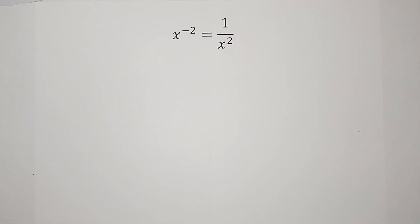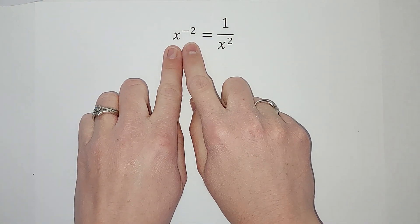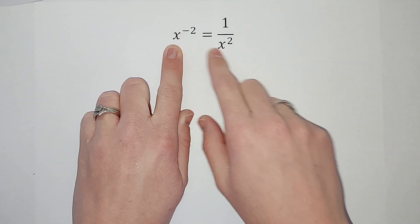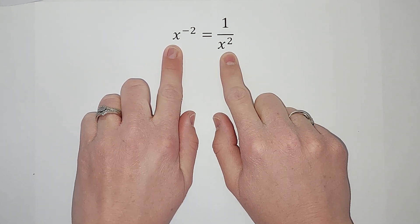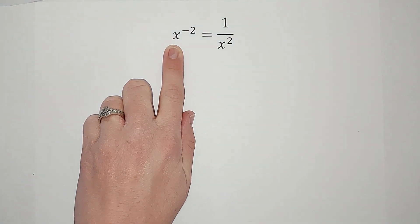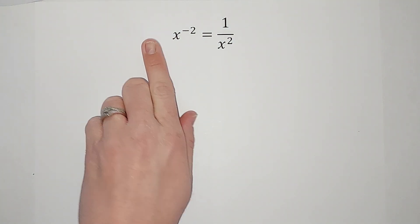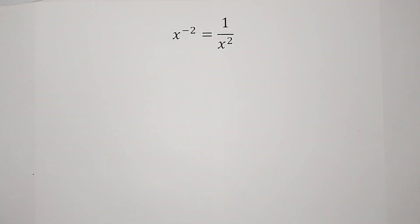Hello! I'm assuming if you've started working with negative exponents, you've been told that if you have a negative exponent in the numerator, you can move it to the denominator and it goes positive — and vice versa. If it's negative in the denominator, move it to the numerator and it goes positive. And you might be like, that's a really cool trick, but why does it work? It kind of seems made up, right?